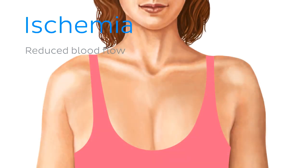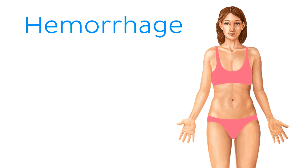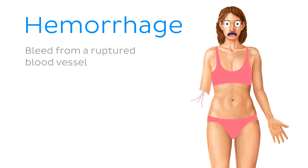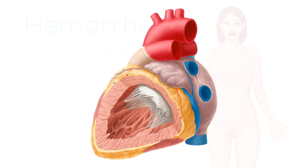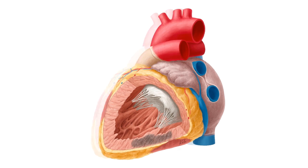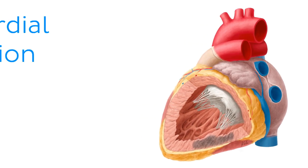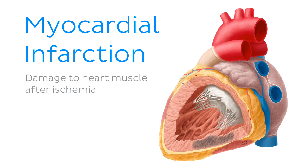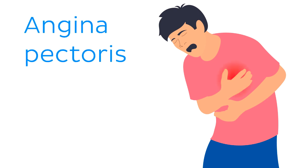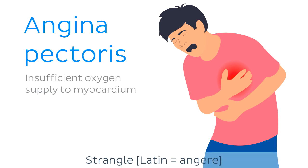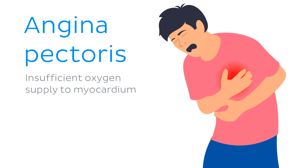Another reason for interrupted blood flow to an organ would be due to hemorrhage, which is a bleed from a ruptured blood vessel. Damage to tissue as a result of reduced blood flow is known as infarction, such as myocardial infarction — damage to heart muscle after ischemia. On the topic of myocardial infarction, angina or angina pectoris is a general term you will often hear in clinical practice. It describes a choking or strangling pain in the chest resulting from insufficient oxygen supply to the muscle of the heart.